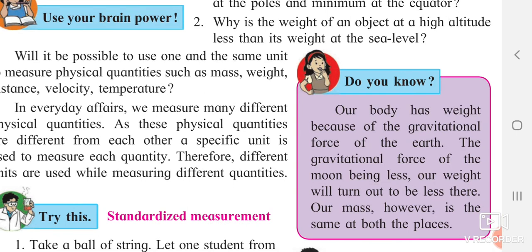Our body has weight because of the gravitational force on us. If there was no gravitation on earth, our body weight would not be defined. The gravitational force of the moon being less, our weight will be less over there. On the moon, the gravitational force is one-sixth of earth's — so if my weight is 42 kg, it will be divided by 6, giving 7 kg on the moon. Weight can vary from place to place, but mass will not change.